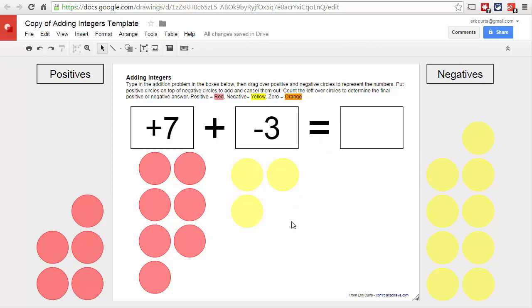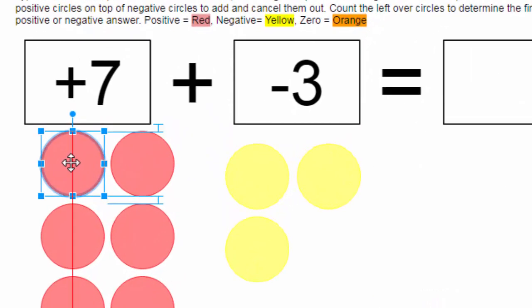So now we've set up the problem, we have seven positives and we have three negatives. So positive seven plus a negative three, and we want to add these together. Now here's where we show what happens when you add positives with negatives.